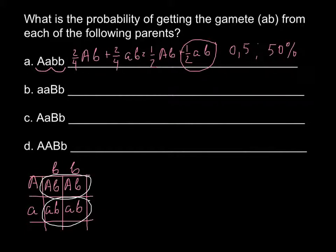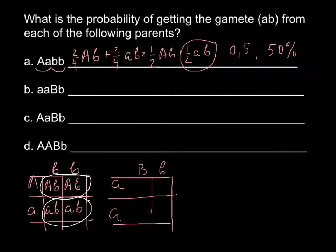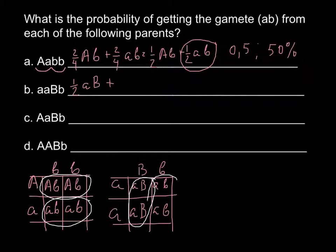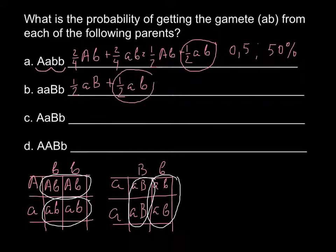For B, we have small a, small a on one side, and capital B, small b on the other side. We also build a Punnett square. The four cells give us: small a capital B, small a small b, small a capital B, and small a small b. Once again, 50% would be small a capital B, and 50% would be small a small b. So the answer is one half small a capital B, plus one half small a small b — which is the same as 0.5 or 50%.